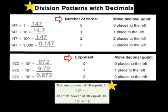Now for the next problem, we see 97 and 2 tenths being divided by the first power of 10. My exponent here is a 1, so that means I'm going to move the decimal one place to the left. So my answer now turns out to be 9 and 72 hundredths.